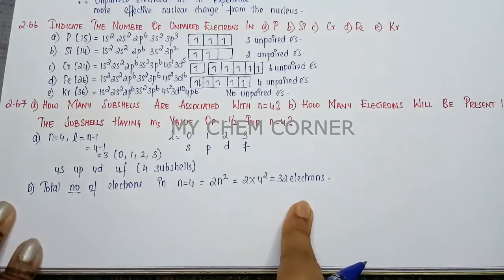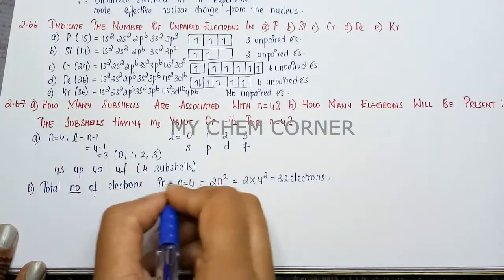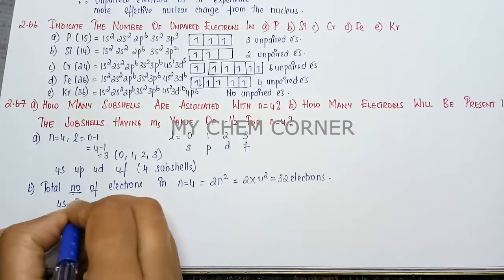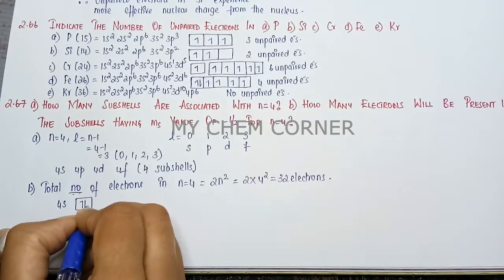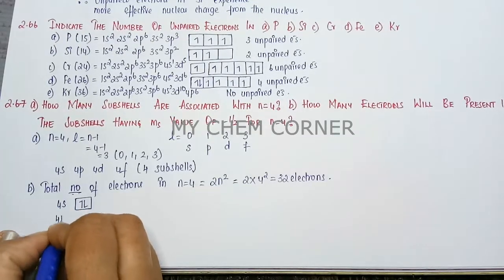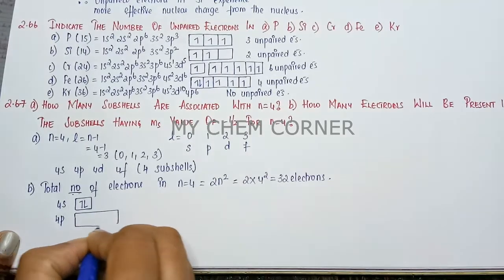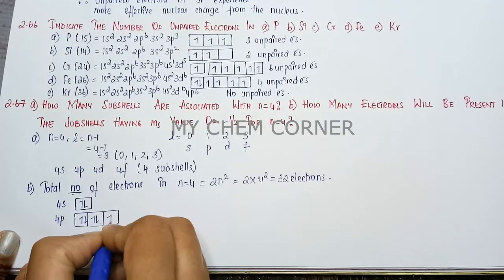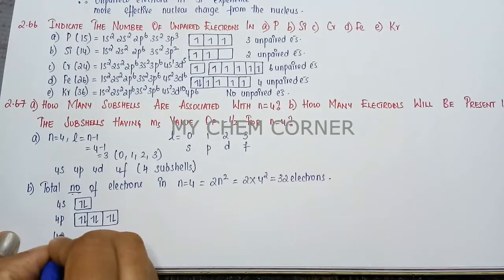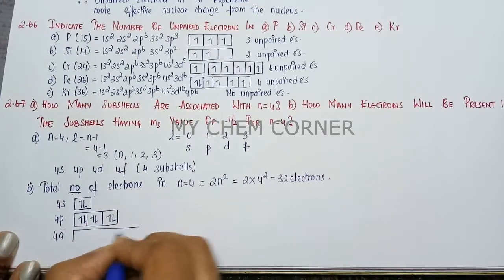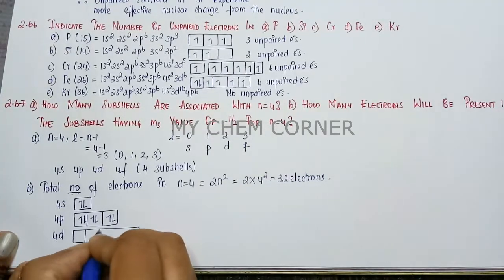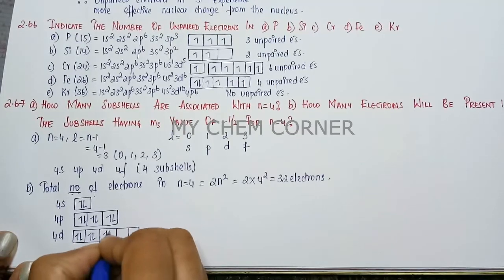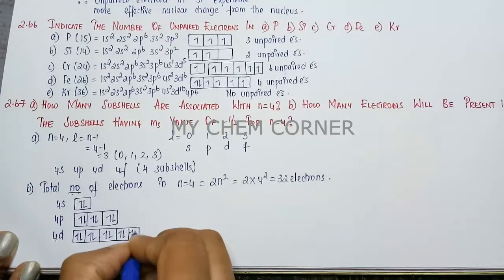Now how are we going to manually find this out? We have n is equal to 4, so 4 subshells are there. So for 4s, 1, 2. For 4p, 1, 2, 3, 4, 5 and 6. For 4d, 1, 2, 3, 4, 5, 6, 7, 8, 9, 10.